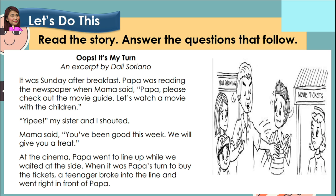An excerpt by Dali Soriano. It was Sunday after breakfast. Papa was reading the newspaper when Mama said, 'Papa, please check out the movie guide. Let's watch a movie with the children.' 'Yippee!' my sister and I shouted. Mama said, 'You've been good this week. We will give you a treat.' At the cinema, Papa went to line up while we waited at the side. When it was Papa's turn to buy the tickets, a teenager broke into the line and went right in front of Papa.